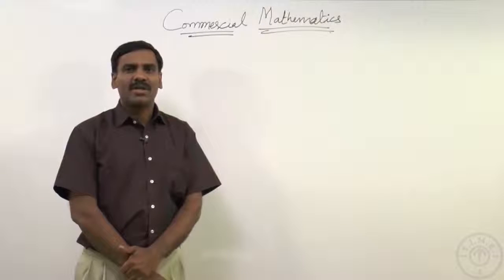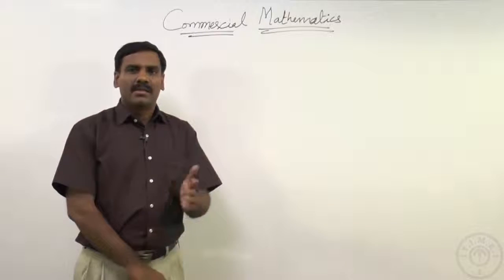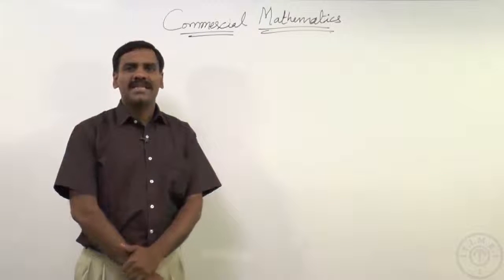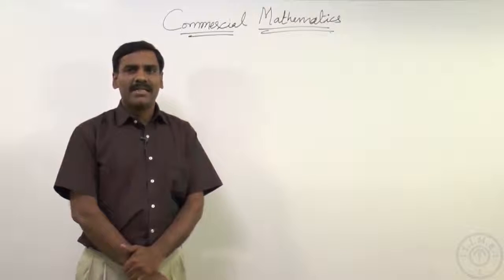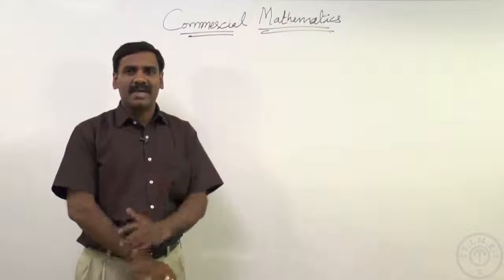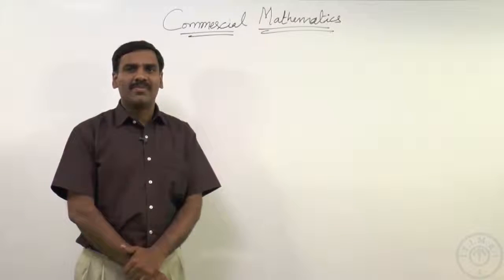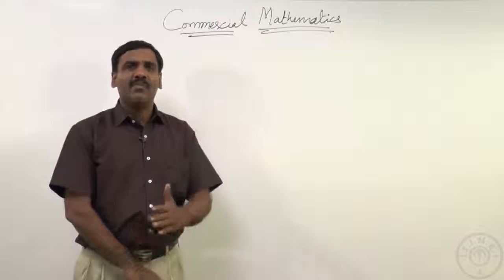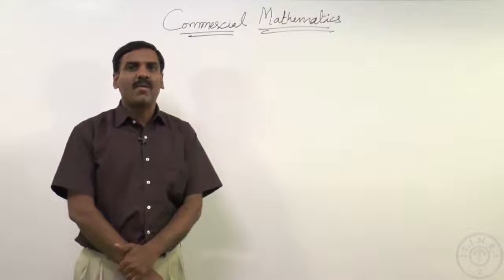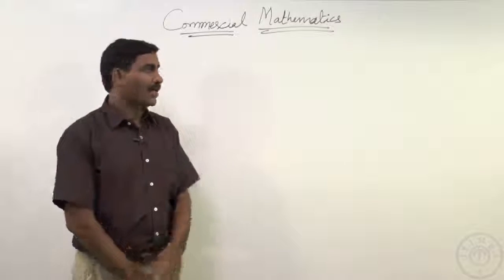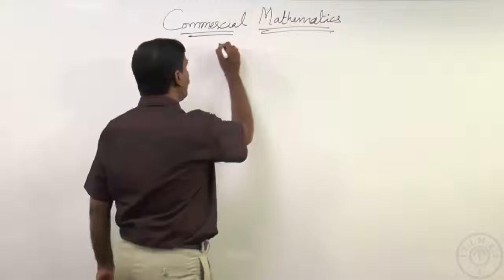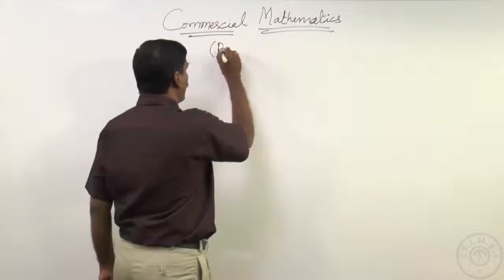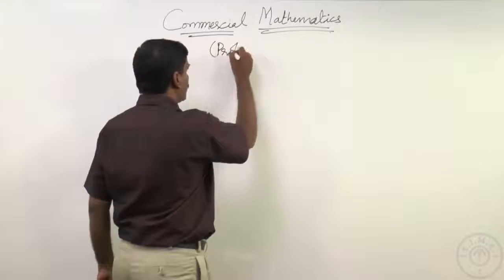Earlier we focused on two persons A and B scoring 40 marks and 50 marks. Let us consider the same example and from there we move on to the next topic, that is profit and loss. So the next topic we will be discussing here is profit and loss.